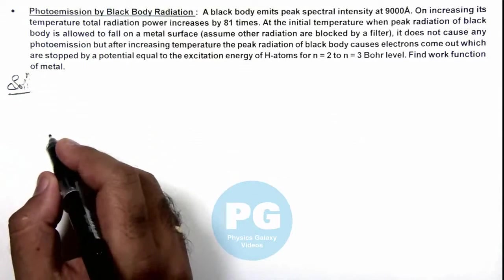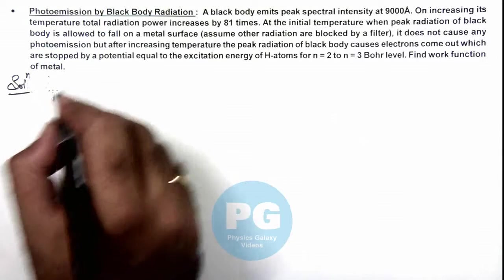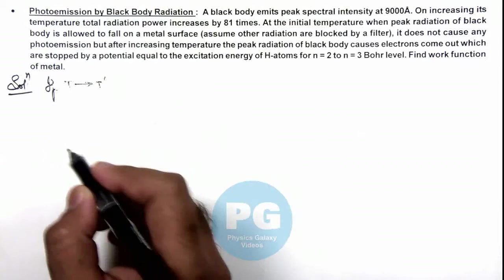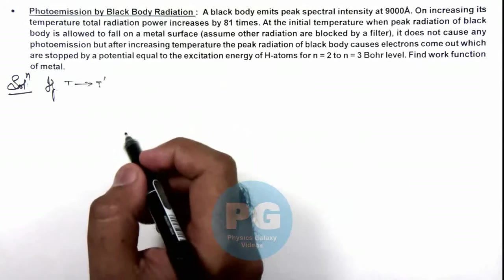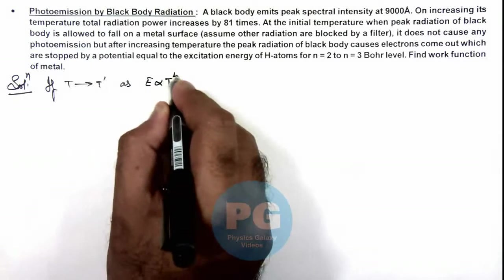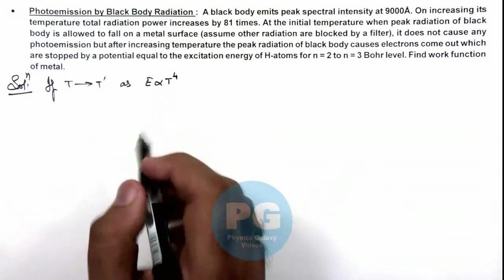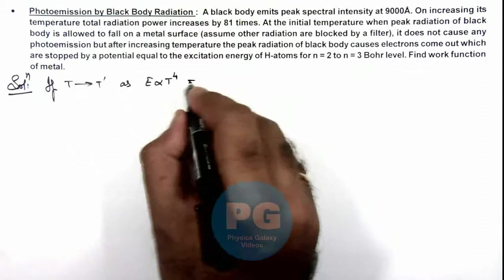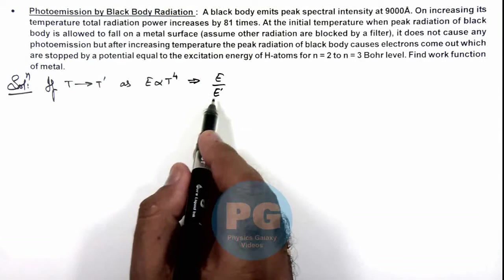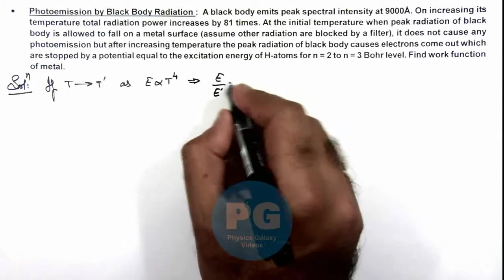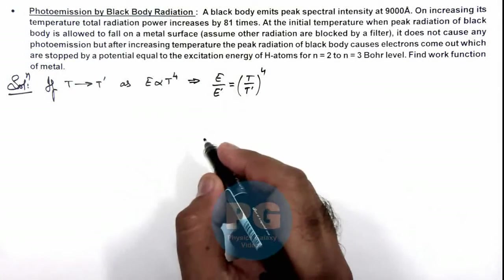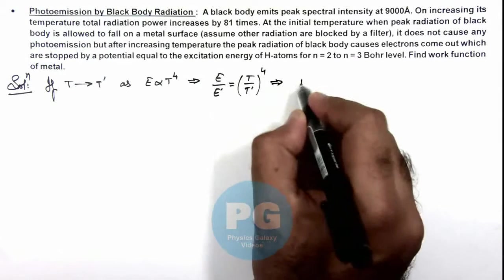Now in this situation, if we assume temperature is increased from T to T prime, then we know that energy of radiation is directly proportional to T to power 4 according to Stefan's law. Here we can write E by E prime, where E prime is the increased radiation power, this can be written as T by T prime to power 4. So this gives us the value of T prime is equal to...